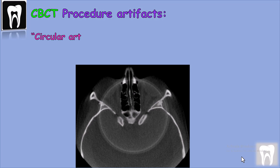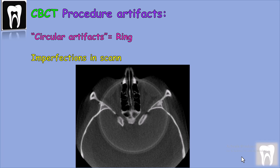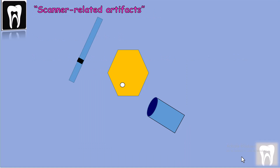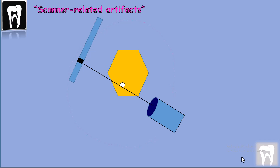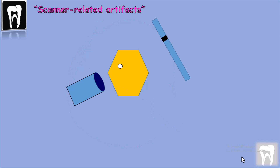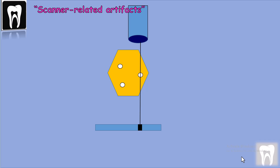Circular artifact, or ring artifact: if one of the detectors is out of calibration — for example, a bad pixel — the detector will give a consistently erroneous reading at each angulation of the tube, resulting in a circular or ring artifact.